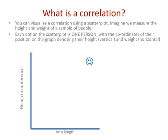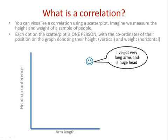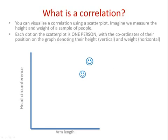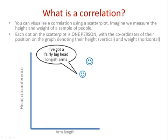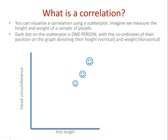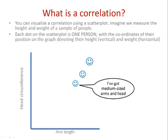What can we say about our first person? Well, they've got a pretty big head and pretty long arms. Moving down, we have someone still fairly big but not as big — a fairly bigish head and longish arms. Then we're down to someone closer to the middle of the scale, with medium-size arms and a medium-size head.